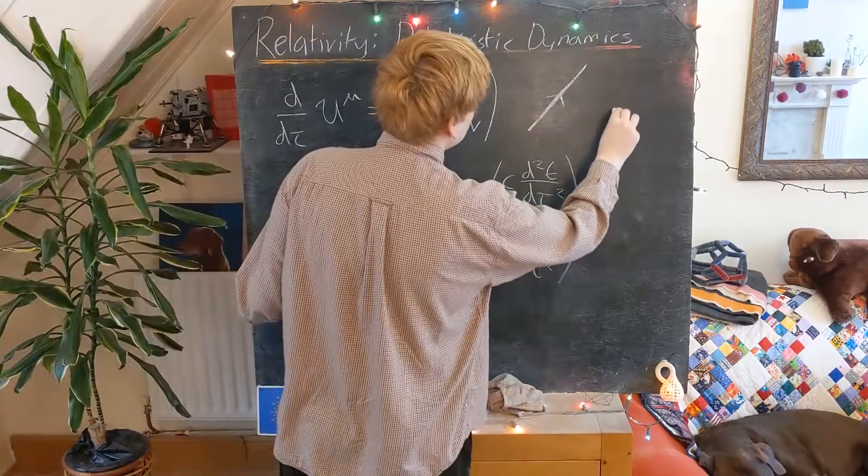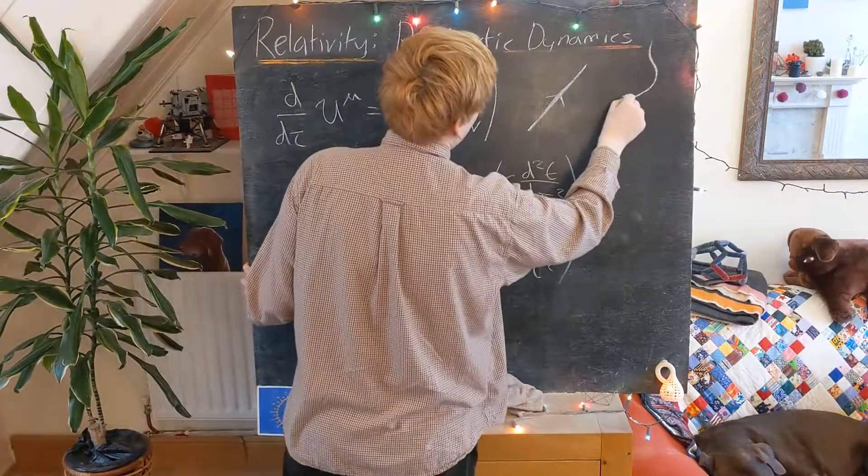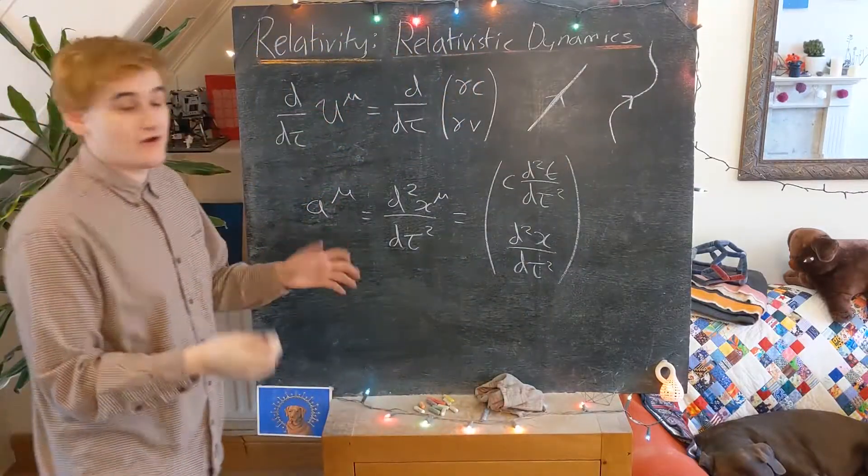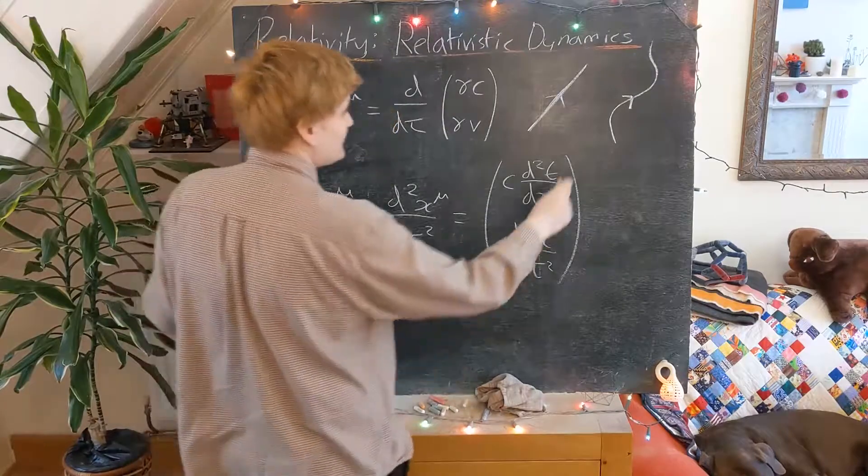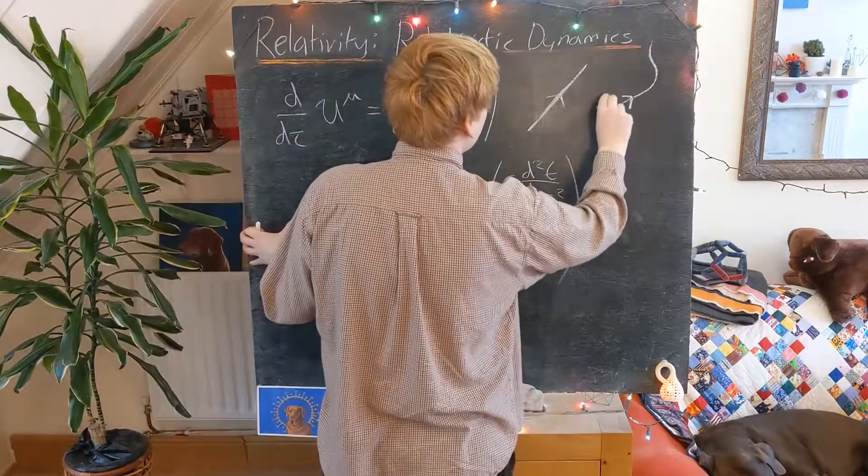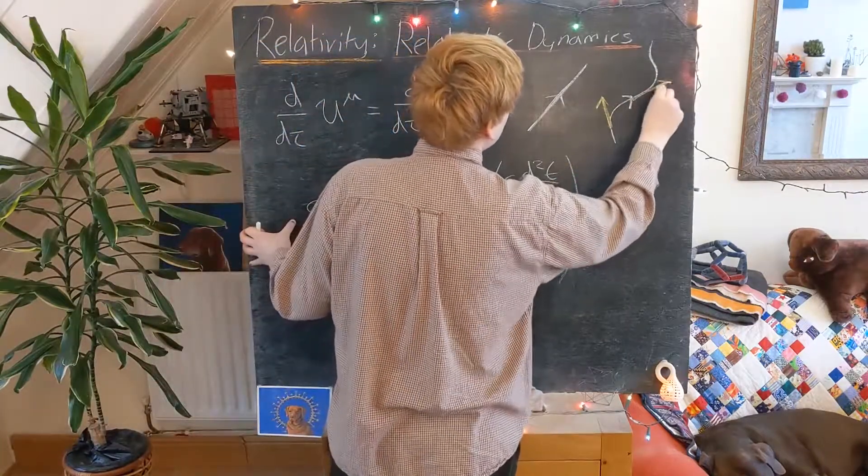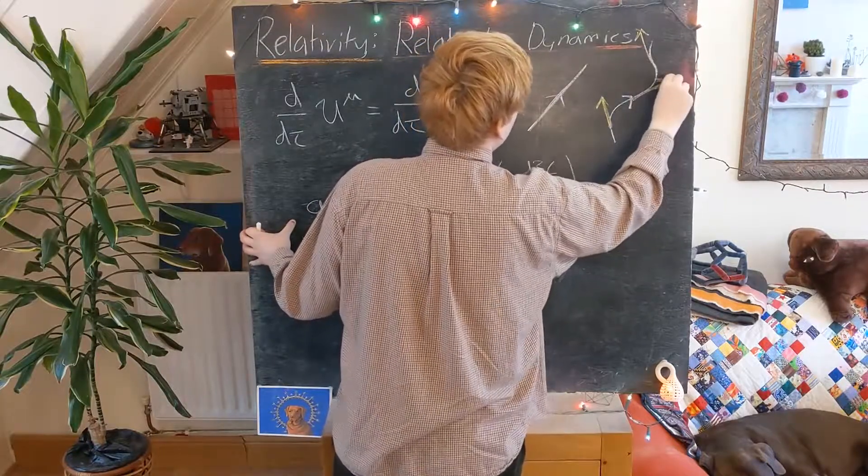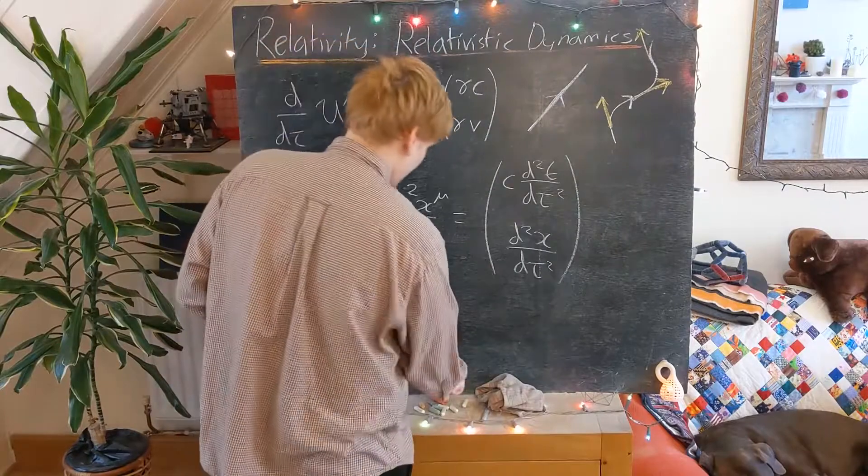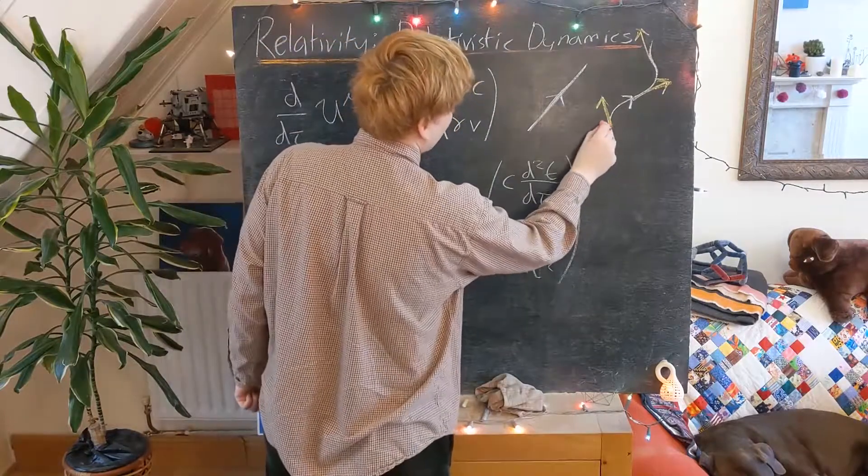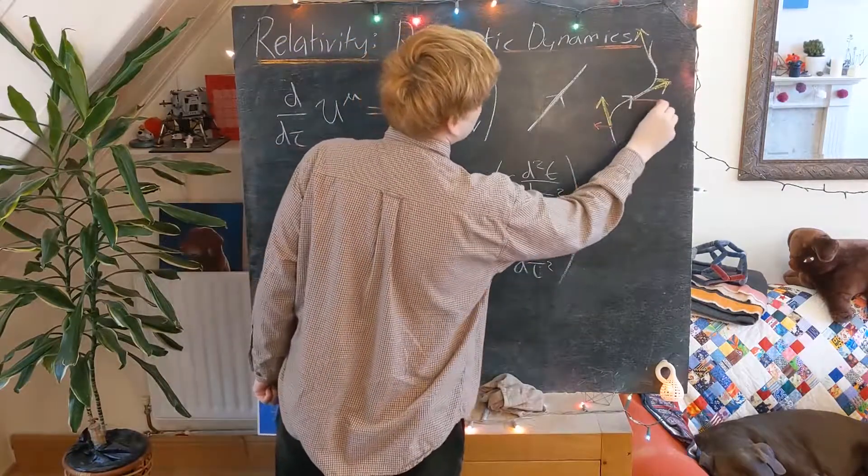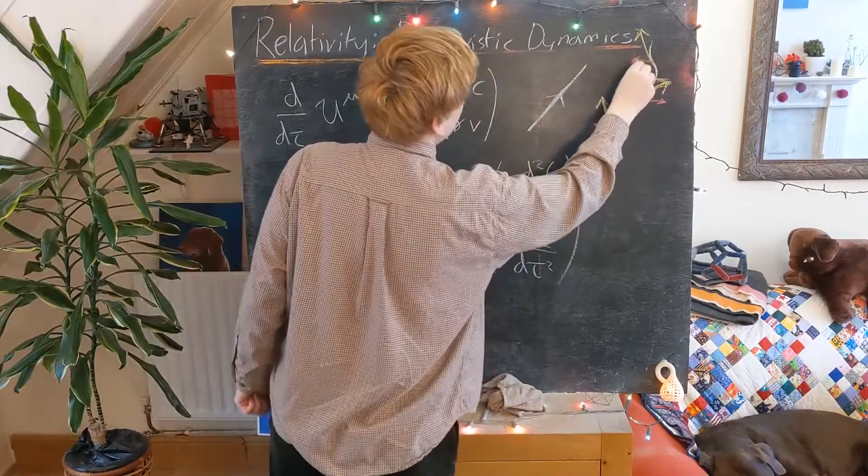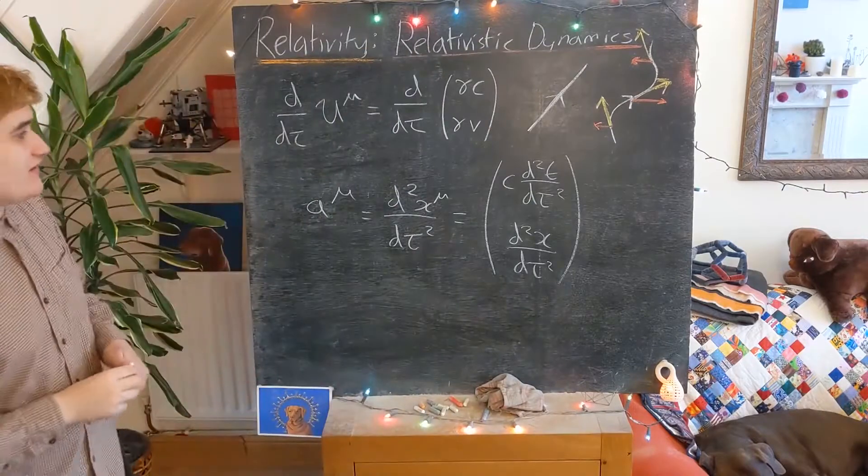But now if your world line is doing something like that, it's now going to have some non-zero 4-acceleration. Because quite clearly we can see the 4-velocity vector is changing on the world line. And so hence its coordinate velocity component, which I'm drawing here in red, is going to also be changing, which we then realize is acceleration.